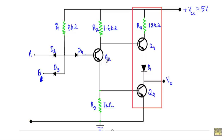Transistor Q2 acts as a phase splitter: when it keeps transistor Q3 in ON state, Q4 will be in OFF state, or when it keeps Q3 in OFF state, Q4 will be in ON state. To turn on transistor Q2, there must be a base current. For base current to flow through the base of Q2, diode D4 — the base-to-collector junction of transistor Q1 — must be in the ON state.